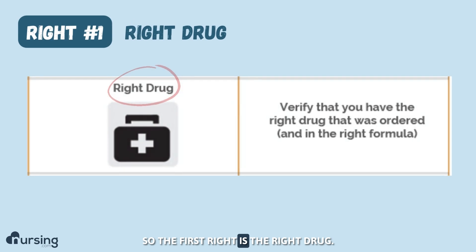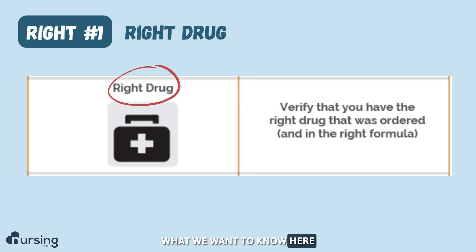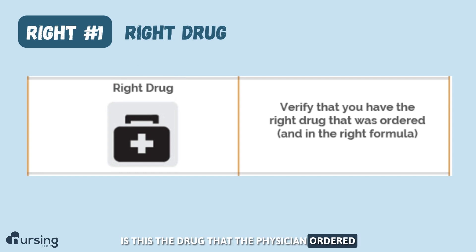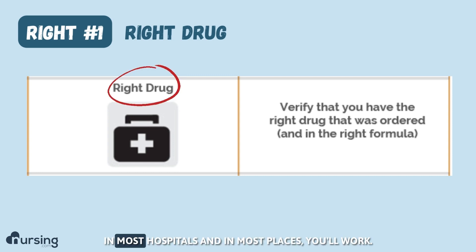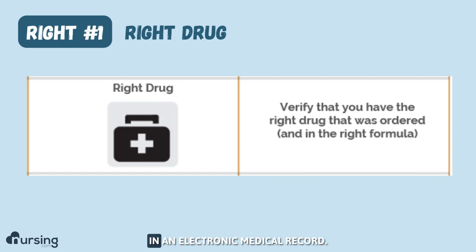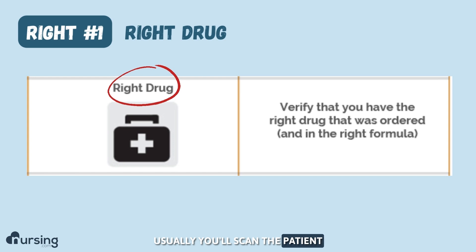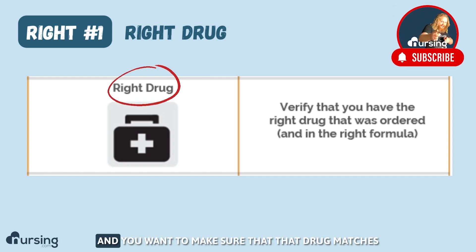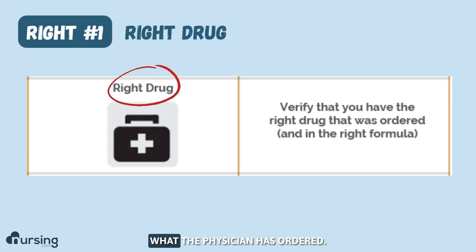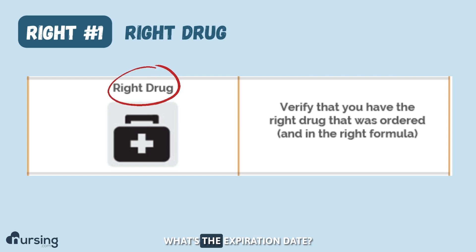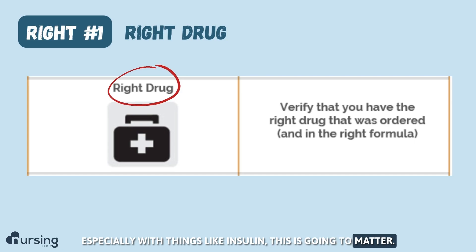The first right is the right drug. What we want to know here is: is this the drug that the physician ordered? In most hospitals and places you'll work, a lot of this is going to be done in an electronic medical record. Usually you'll scan the patient and then scan the drug, making sure it matches what the physician ordered. Check the expiration date — especially with things like insulin, this is going to matter.